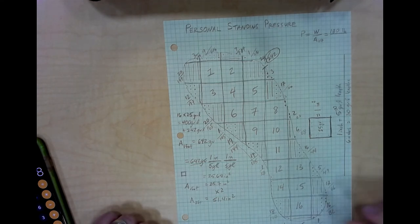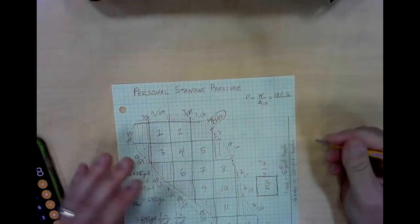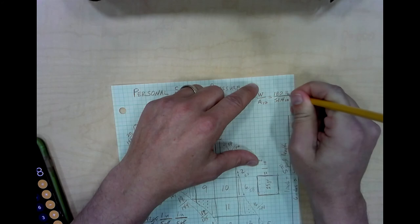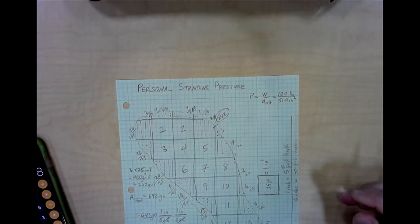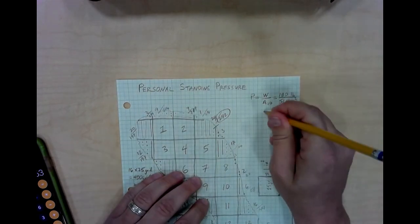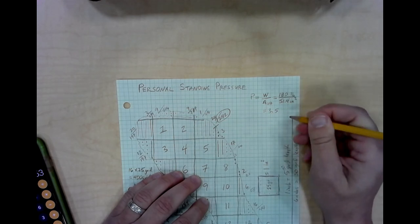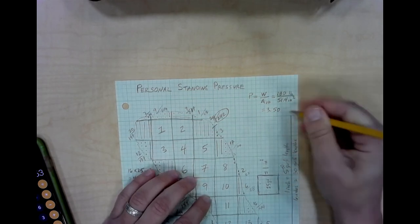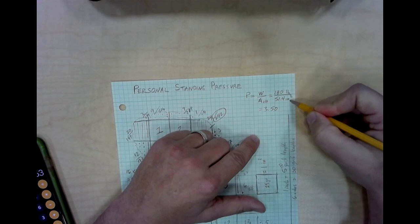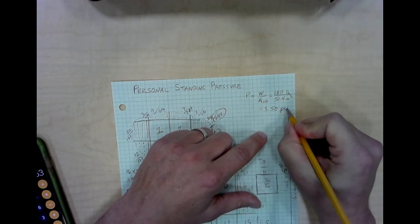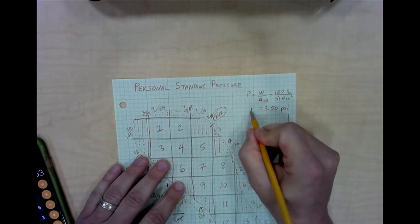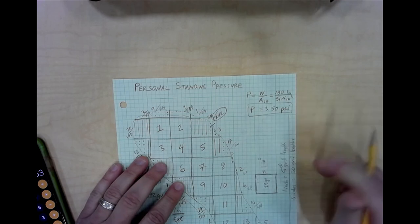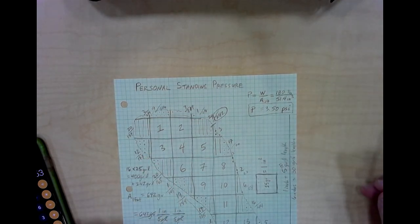Now that I've established that value, I can take it back here to my calculation up here, 51.4 inches squared. And I can do that division. 180 divided by 51.4 gives me 3.50194. I can't keep all of those decimals. I can keep the 3.50 and now my units are pounds per inch squared, which we typically abbreviate as PSI. So the pressure that I exert on the floor when I'm standing on both feet at rest would be 3.5 pounds per square inch.